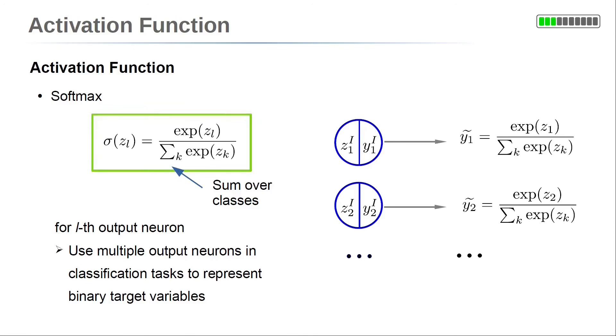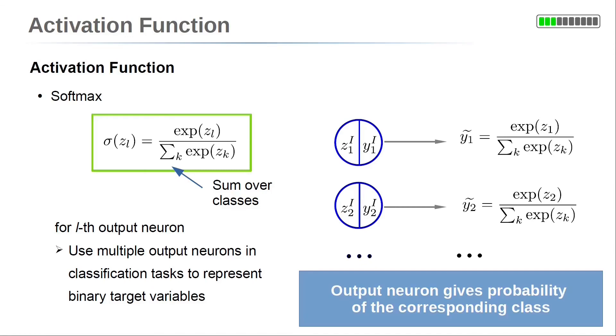In the output layer, we use the softmax function as an activation. So, the output of the l-th neuron is the exponential function of the summation of this neuron z_l over the sum of all output neurons of this exponential expression. Each output neuron gives a probability for the corresponding class. Note that all probabilities of the output neurons sum up to 1 as expected.